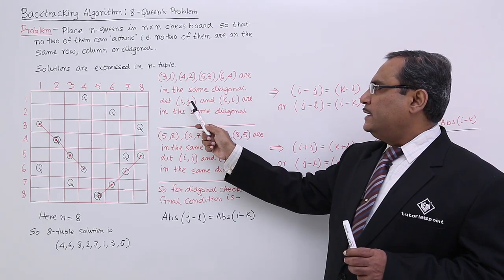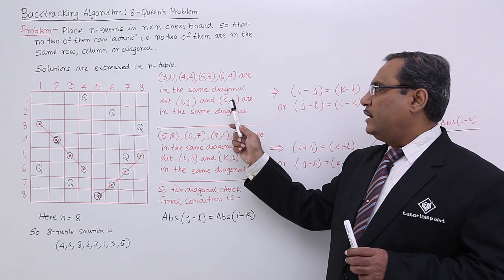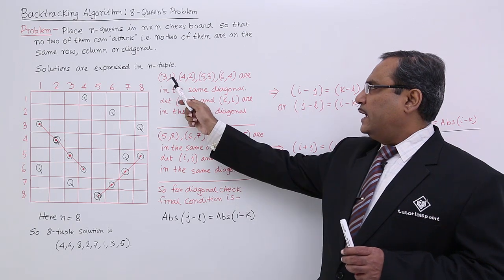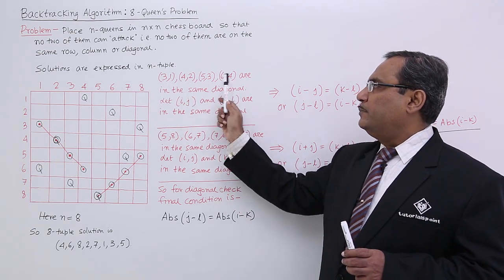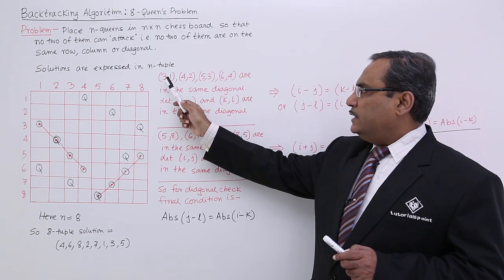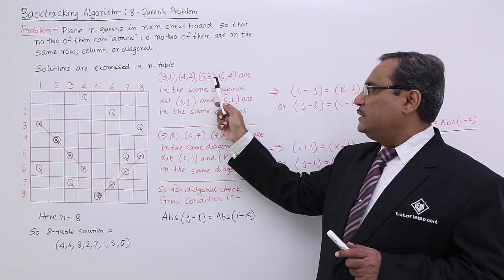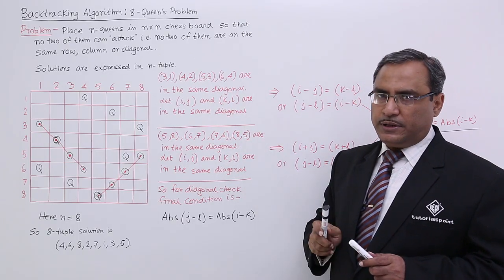Let us suppose i j and k and l, i comma j and k comma l are in the same diagonal. i and j can be any one of them, k and l can be any one of them. Now, you see here we are getting one logic. That is 3 minus 1 is equal to 4 minus 2 is equal to 5 minus 3 is equal to 6 minus 4 in this way.